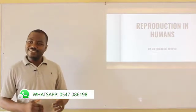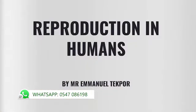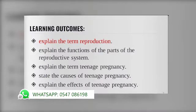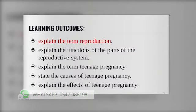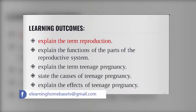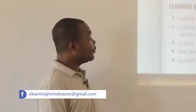This leads us to the topic for today. We are going to learn about reproduction in humans. By the end of the topic, learners will be able to: explain the term reproduction; explain the functions of the parts of the reproductive system; explain the term teenage pregnancy; state the causes of teenage pregnancy; and explain the effects of teenage pregnancy.